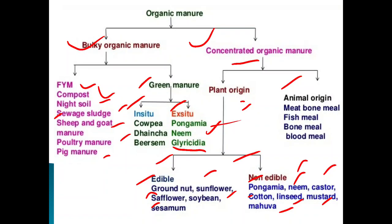Under animal origin concentrated manures, we have meat and bone meal, fish meal, bone meal, and blood meal. Bone meal is high in phosphorus. Blood meal is generally high in nitrogen. These are the animal-origin concentrated organic manures.